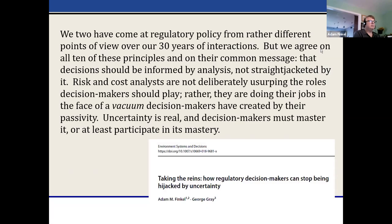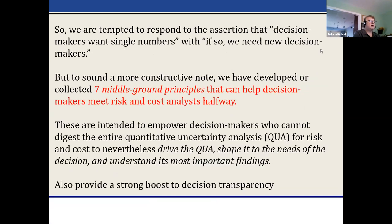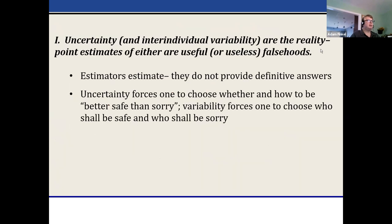We're tempted to respond, when people say decision makers want point estimates, that we need different decision makers. But to be more constructive, we've come up with some principles. Uncertainty and variability are the reality — point estimates are either useful or useless abstractions or falsehoods. A useful falsehood is when you use a point estimate to enable the human mind to make a decision — it's admittedly hard to compare probability distributions or p-boxes to each other.